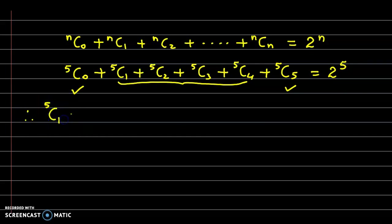Therefore, we have 5C1 plus 5C2 plus 5C3 plus 5C4 is equal to 2 raised to 5. This value is 32 minus 5C0 minus 5C5.